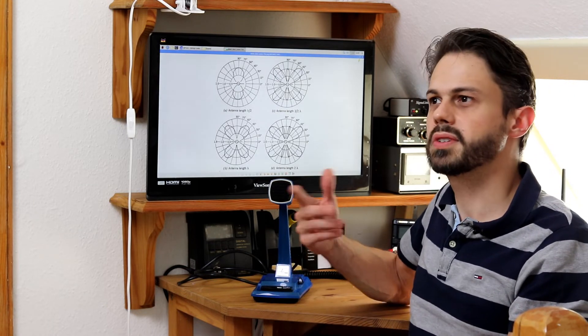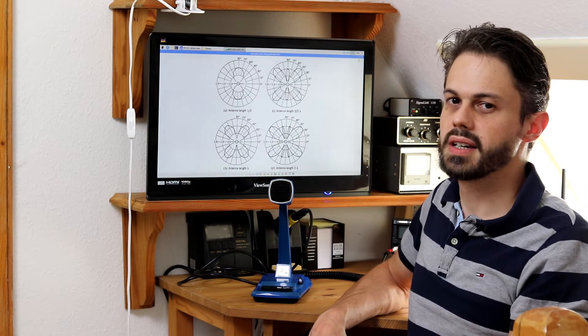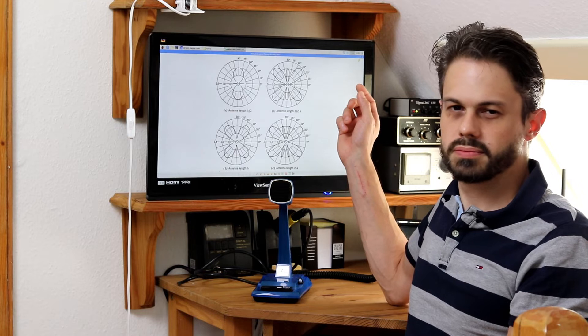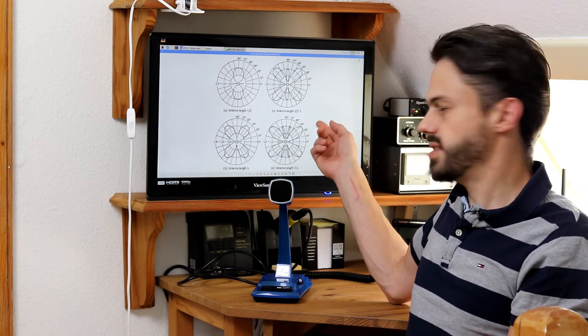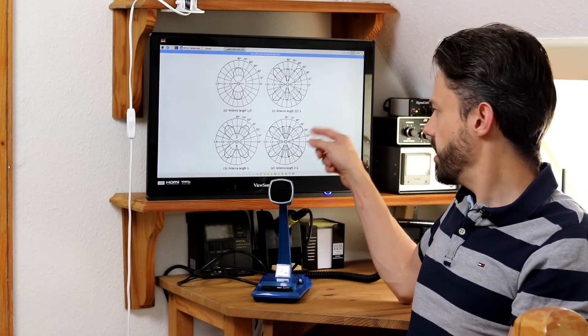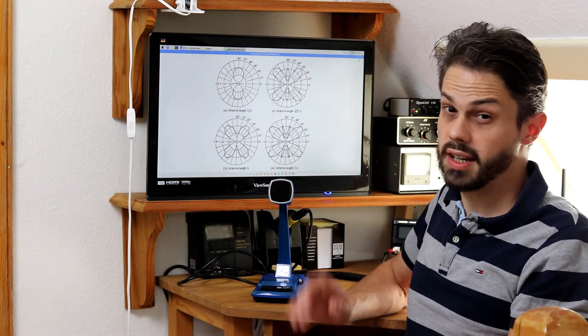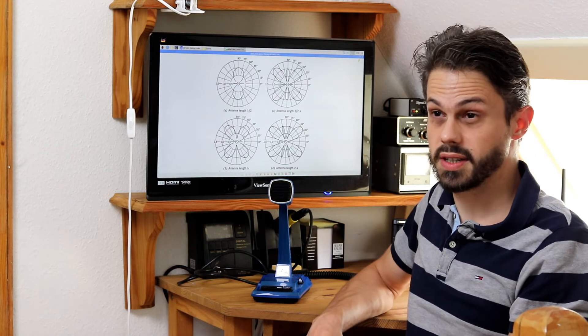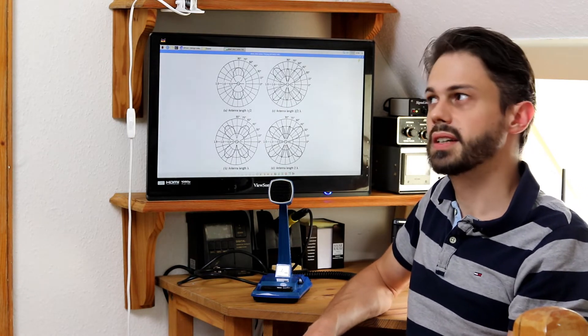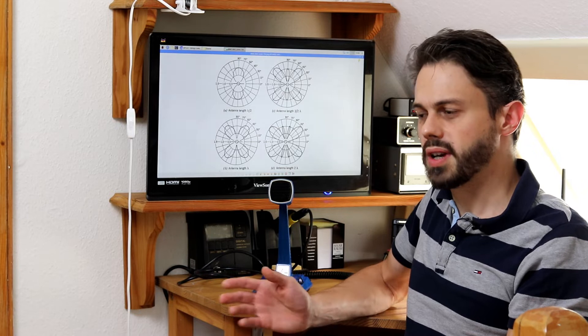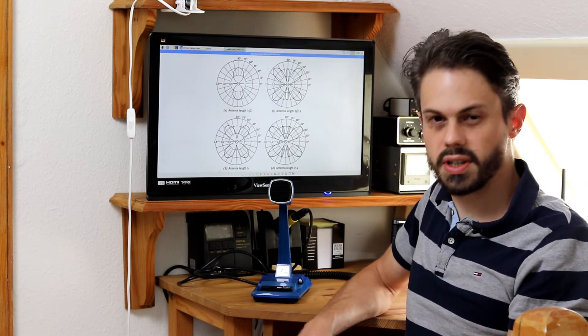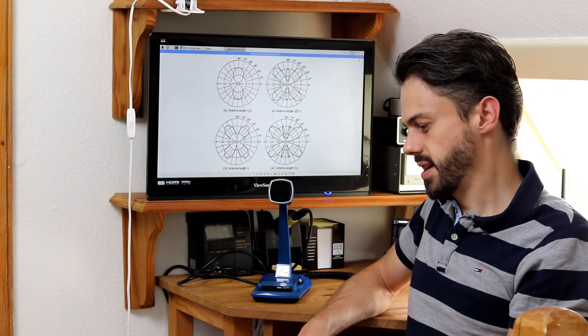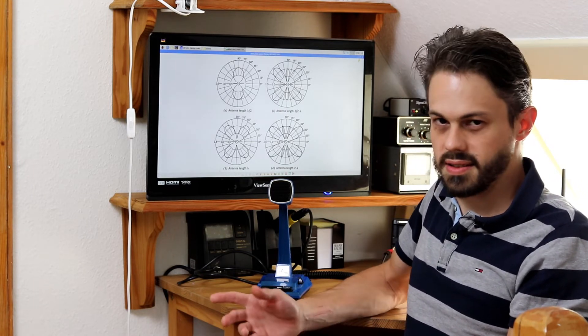Now the problem is and I have noticed this in practice, the problem is that you kind of never know if you can reach a station. Because if the station is in one of these lobes then fine but if it's not then bad luck. And that can be really frustrating because you operate and you hear CQ and the station doesn't hear you and you cannot break pileups. And it's not a lot of fun.